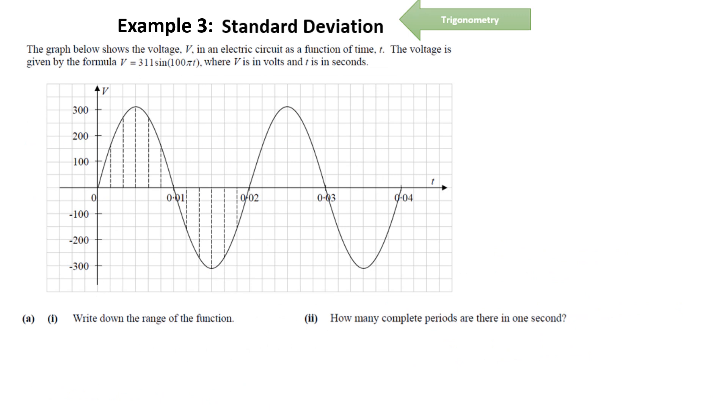Example 5.3 standard deviation. So this question has a link to trigonometry because it is a trigonometric function. But a very basic trigonometric function. We're focusing on really the question which is going to ask us to work out the standard deviation. So the graph below shows the voltage V in an electric circuit as a function of time. The voltage is given by the formula V equals 311 sine of 100 pi T.